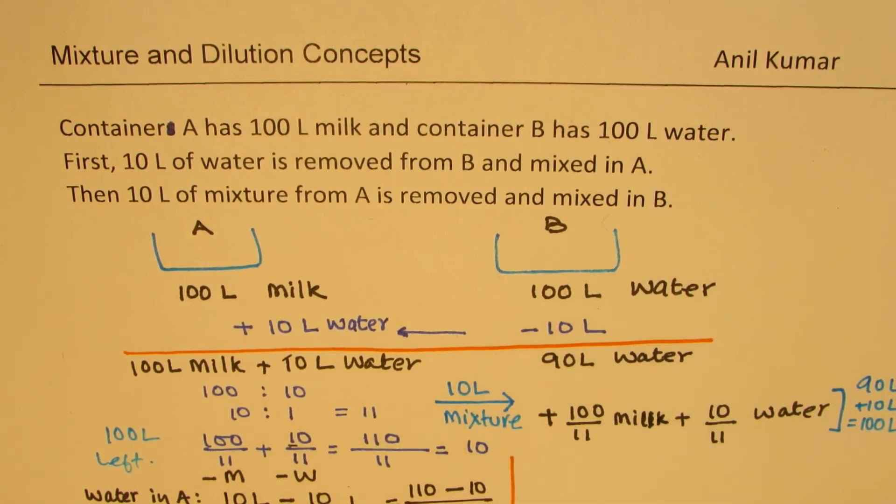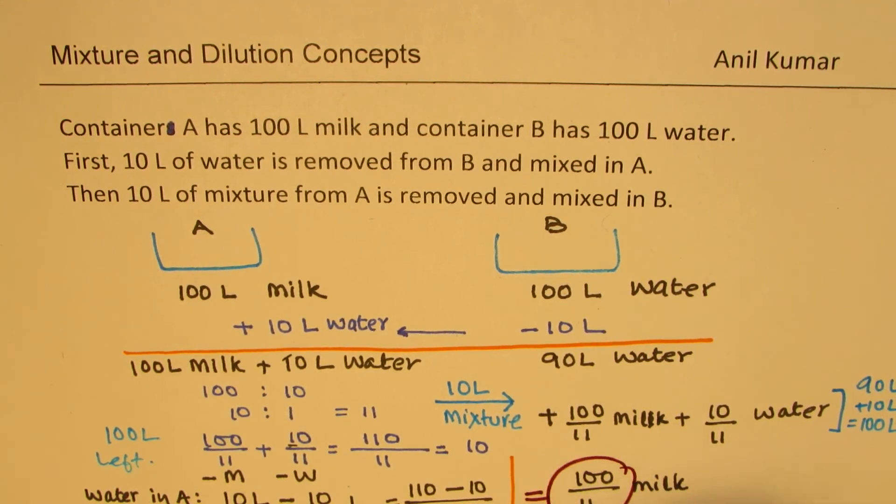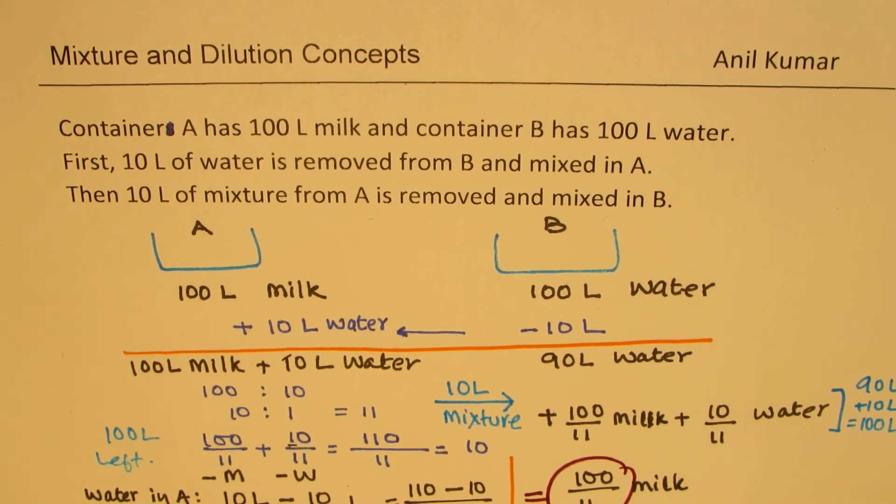Let us also see how much milk we have in B. As far as B is concerned we have 100 over 11 of milk. As you can compare now both are same. Both are 100 over 11. Both are 100 over 11 litres. So both are same.